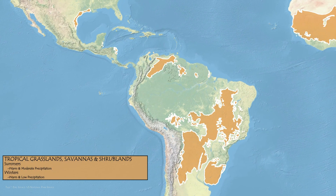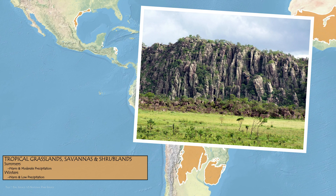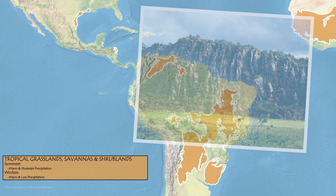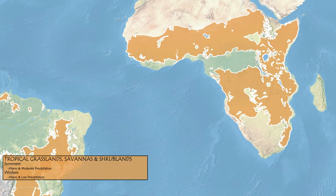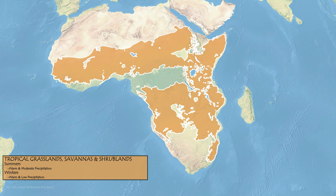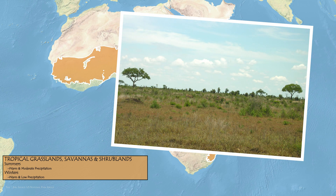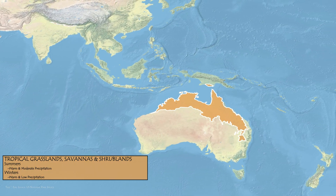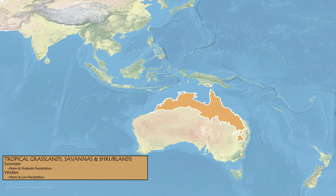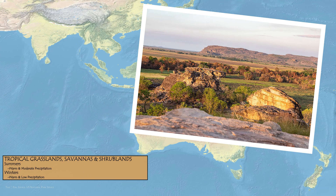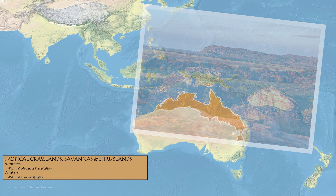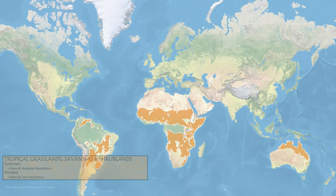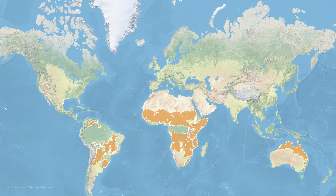Then we have the tropical grasslands, savannas, and shrublands. These are largest in South America, the African savanna — which is just an iconic landscape — and northern Australia. They receive enough rain to support grasslands, but not enough to support the tree cover needed for forests. They have very warm, stable temperatures as well, and monsoon climates, but when it rains, it doesn't pour nearly as much as the dry broadleaf forests.